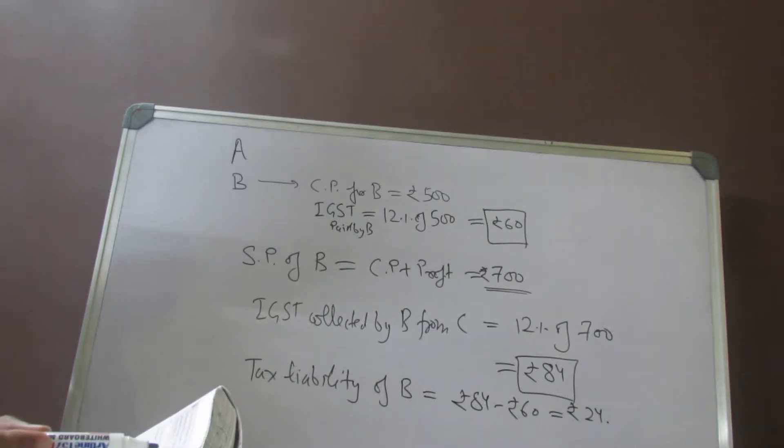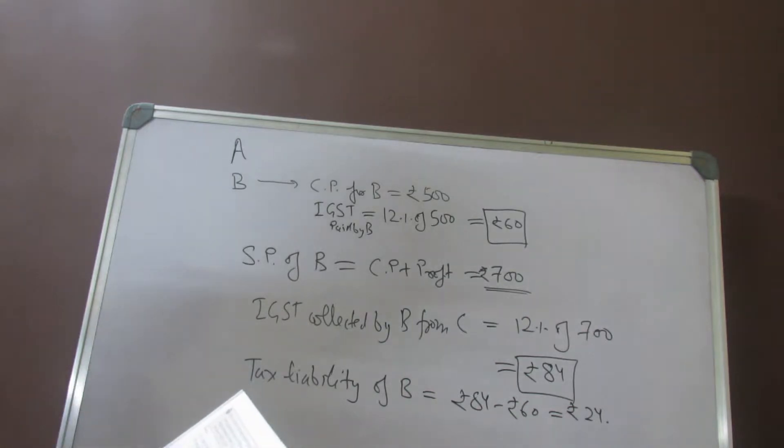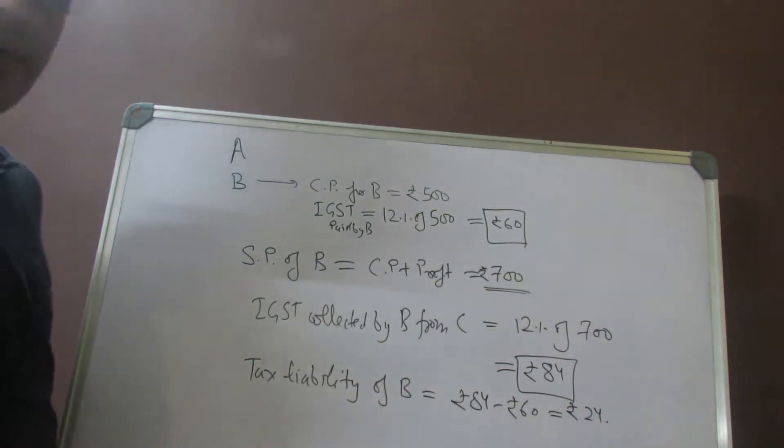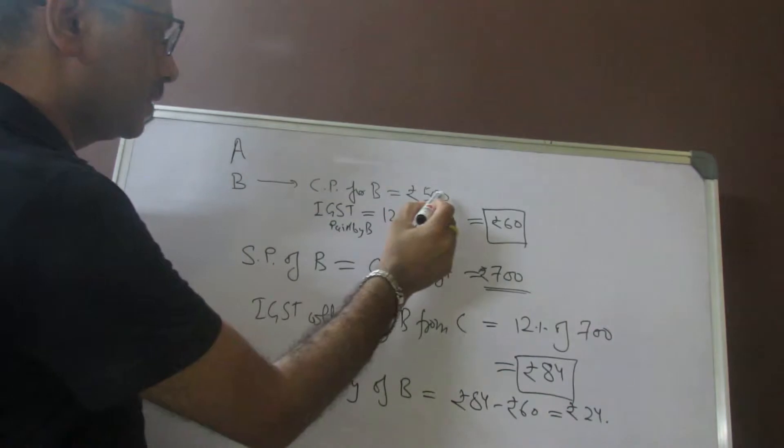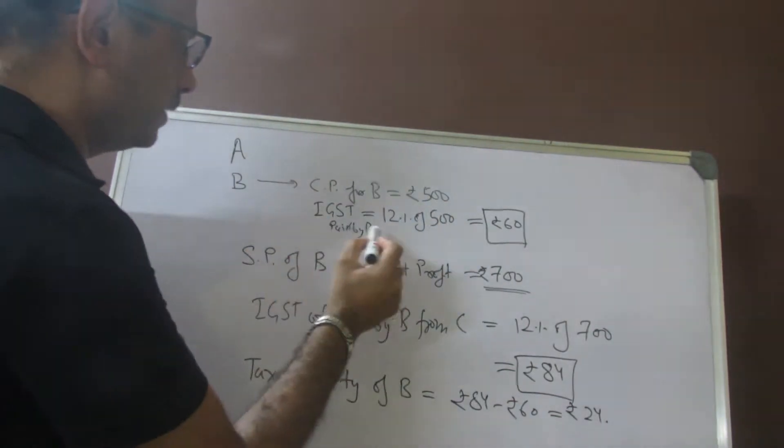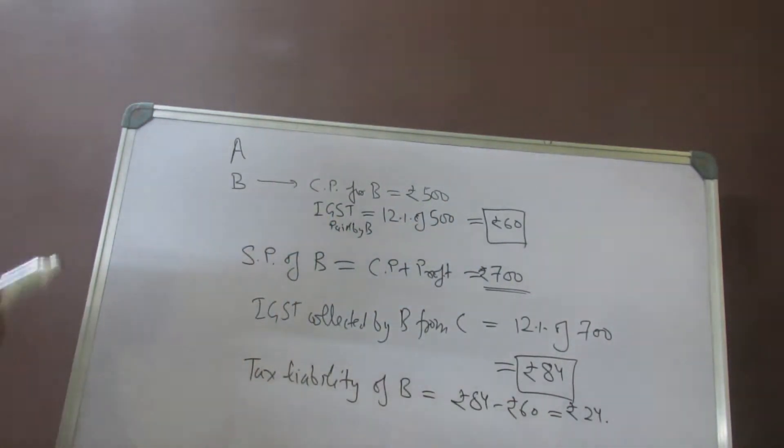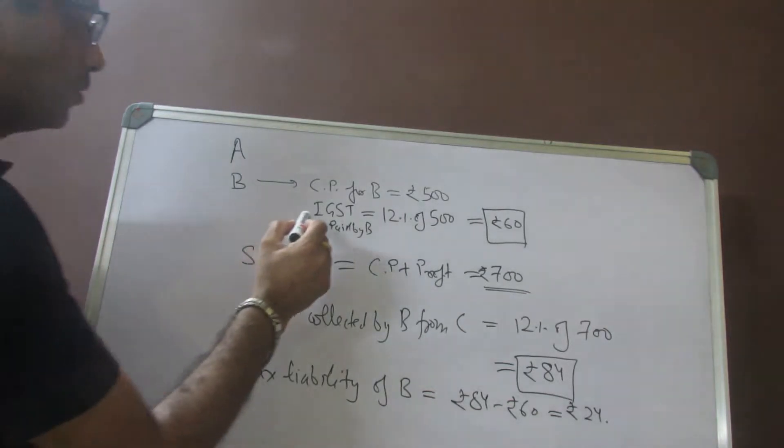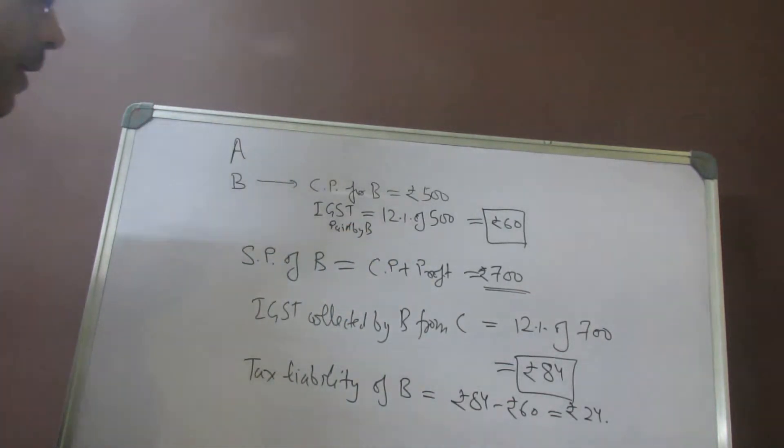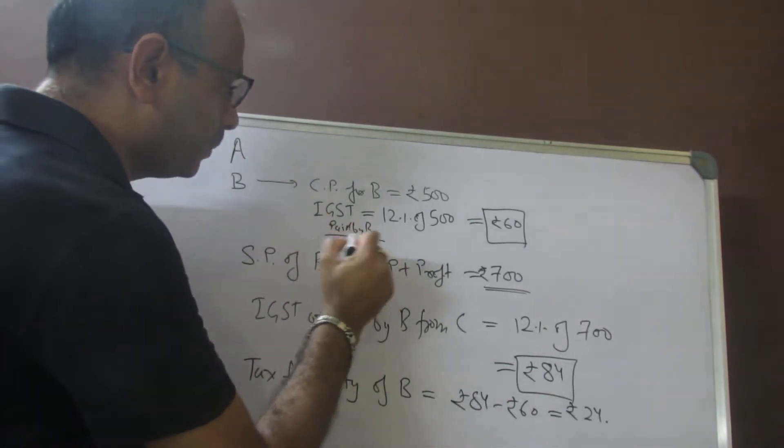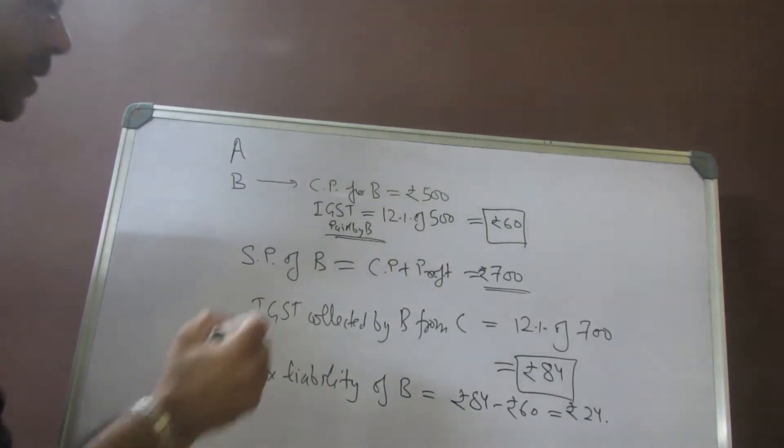We were asked to find tax liability of B if the net rate of GST is 12%. So we calculated CP for B and found since all of them are in different states, only IGST is to be paid. IGST paid by B is 60 rupees, and this is also called input tax of B.